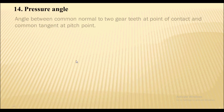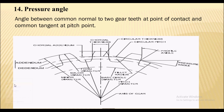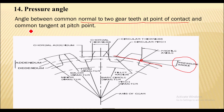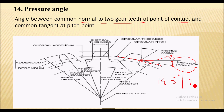Next is the pressure angle, a very important term. The pressure angle is the angle between the common normal to two gear teeth at the point of contact and the common tangent at the pitch point. In general manufacturing, standard pressure angles are kept at 14.5 degrees or 20 degrees.